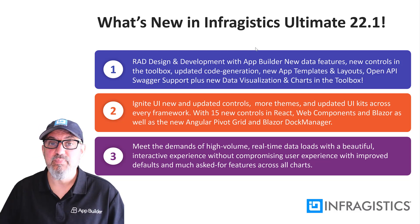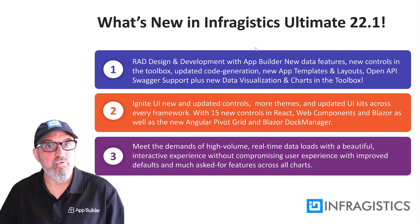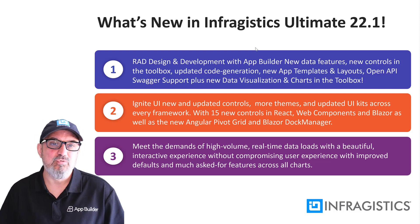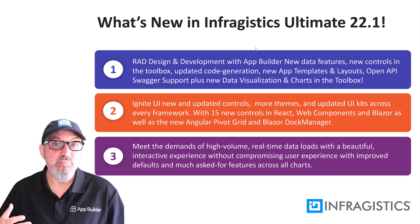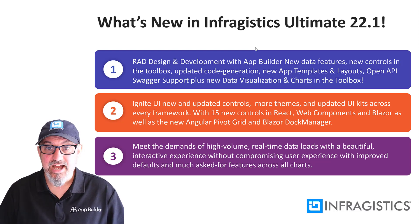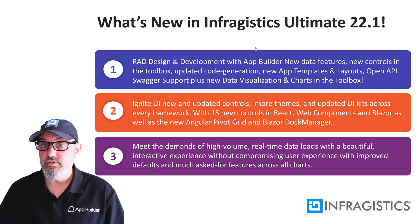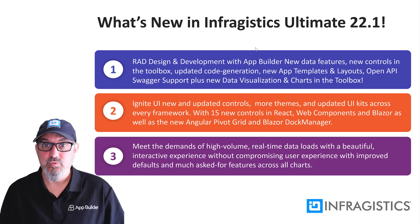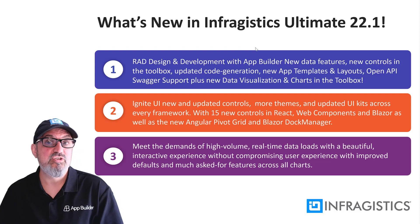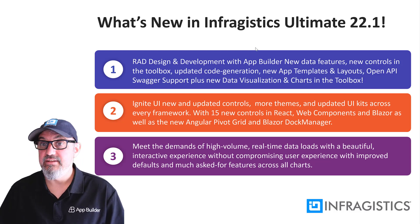The second area you can expect improvements in 22.1 is new controls. Everyone loves new controls. One of the big highlights is the new pivot grid coming in Angular as well as the Blazor doc manager. Besides that, we have new themes in every platform and new UI kits. If you're using Sketch or Adobe XD, you can design in the tool of your designer's choice and then push that right over to AppBuilder and get code with those branded themes.